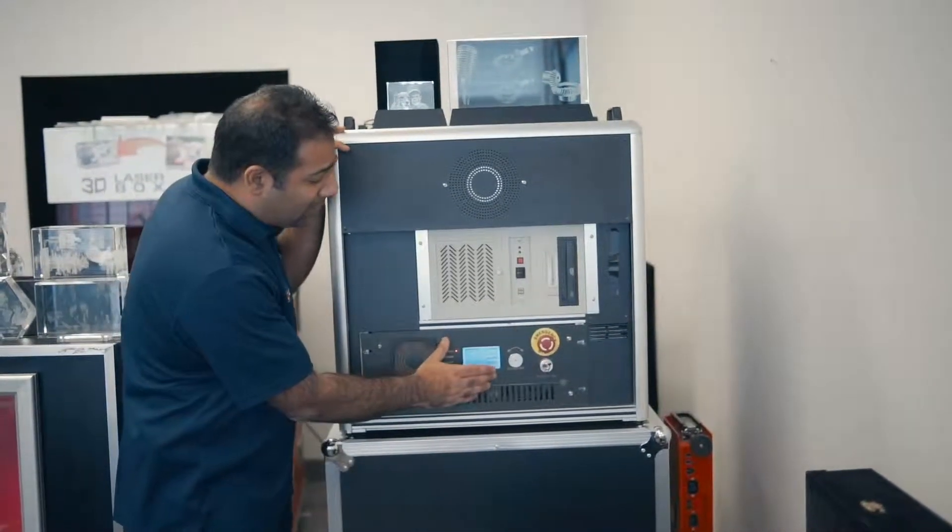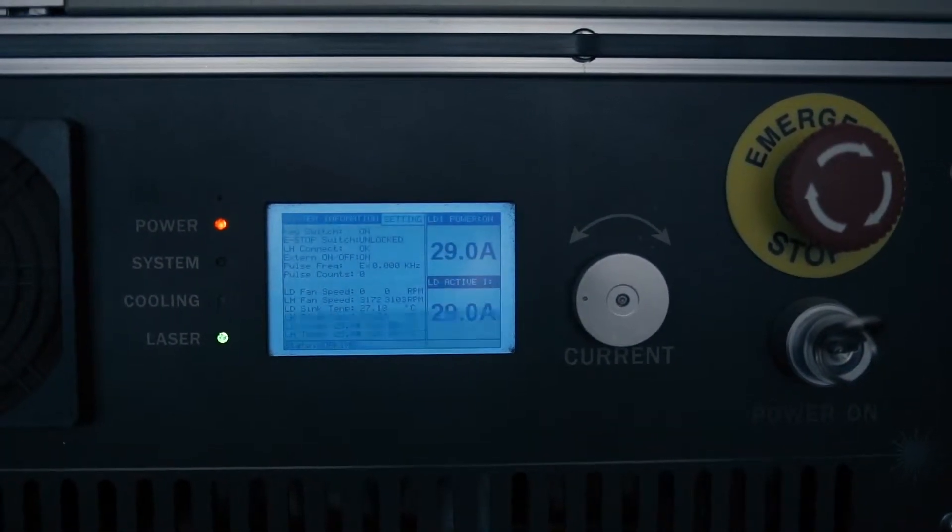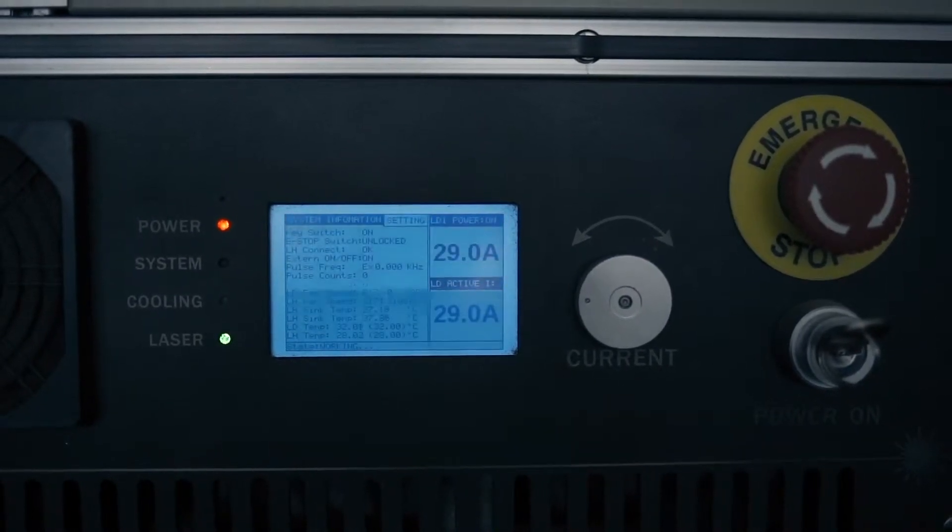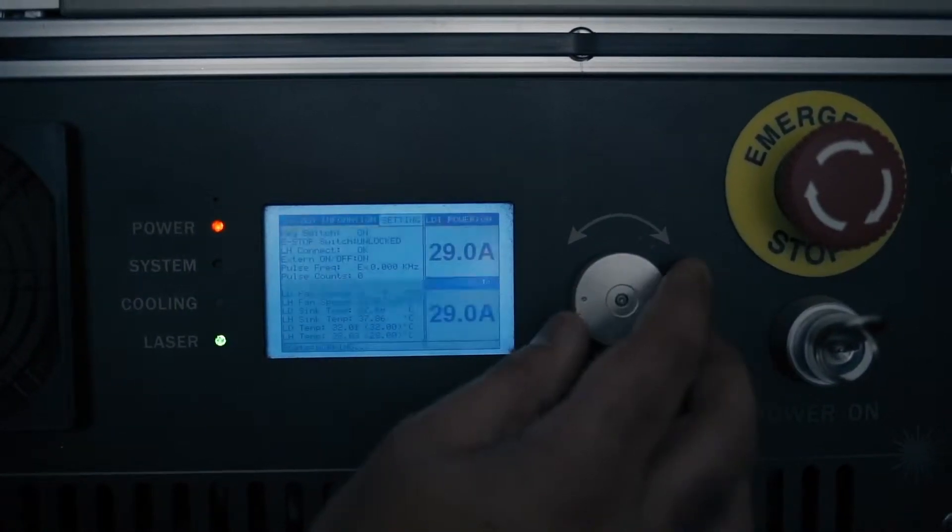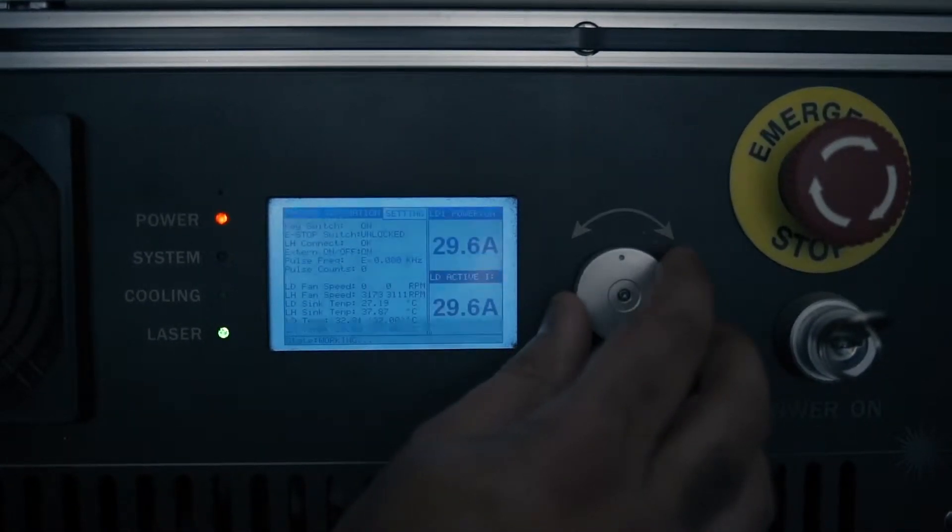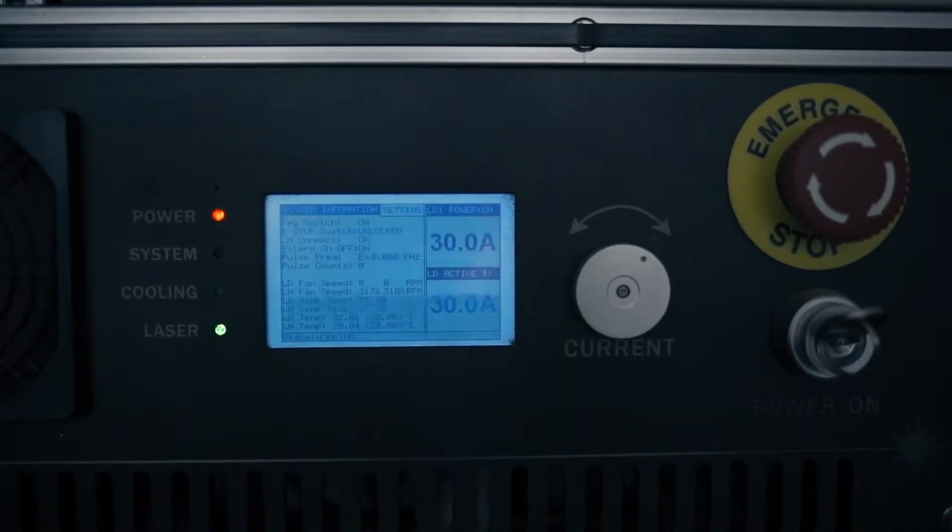Now, to explain how this works, what you're going to want to do is set your laser to 29 amps. The reason I say 29 amps is because we've calibrated dozens of lasers and 29 is generally a good starting point. After you burn your first crystal, what you're going to want to do is pull it out and change your setting to 30 amps.